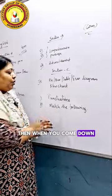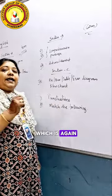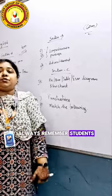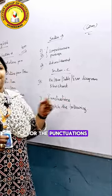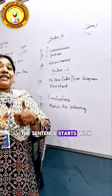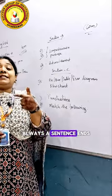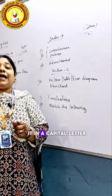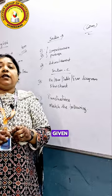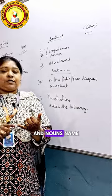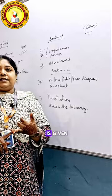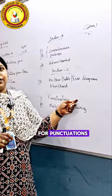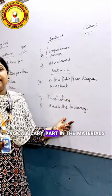When you come down you have punctuations, which is again — you need to write about commas, full stop, and quotations. Always remember: basic tips for punctuation — the sentence starts with a capital letter, the sentence ends with a full stop, wherever the pronoun 'I' is given you need to write it in a capital letter, and nouns — name of a place or name of a person — are written with a capital letter.